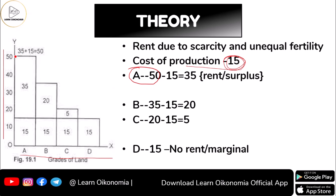Grade A's output is 50 units, of which 15 is the cost of production. This cost is represented by the lower rectangle area. The remaining 50 minus 15, which equals 35, is the surplus. This 35 will be going as rent for the Grade A land.